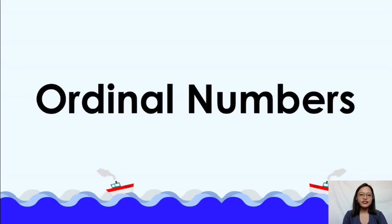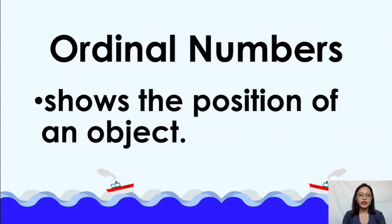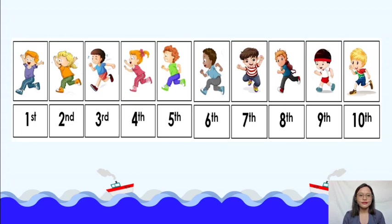Hi children! Let's learn ordinal numbers. When we say ordinal numbers, it shows the position of an object. First, second, third, fourth, and so on. These are the numbers that tell the position of something or somebody.